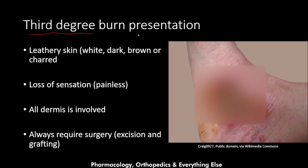The third degree burn presents as leathery skin — sometimes white, sometimes dark brown. As we can see in this picture, this is a third degree burn where you can see the fat exposed, meaning all the skin layers are obliterated down to the fat.